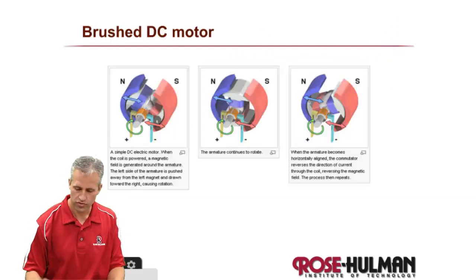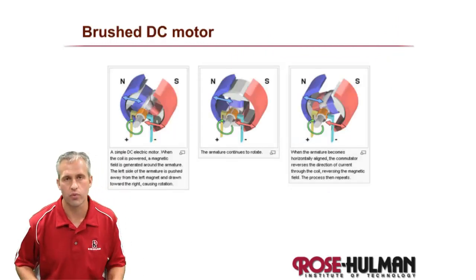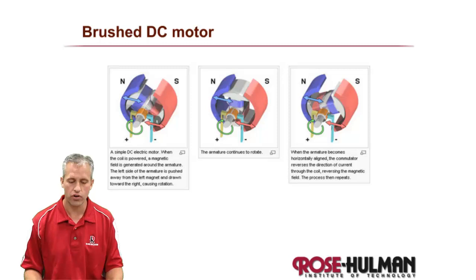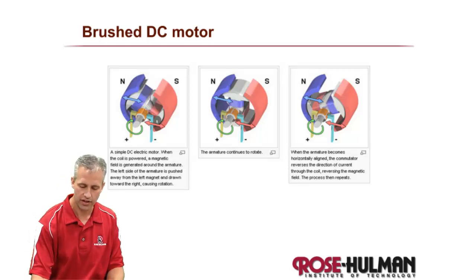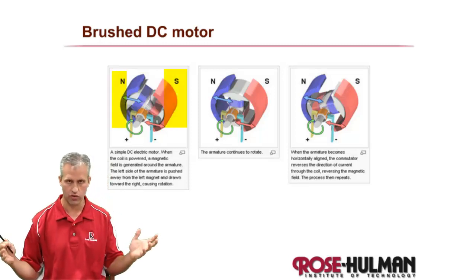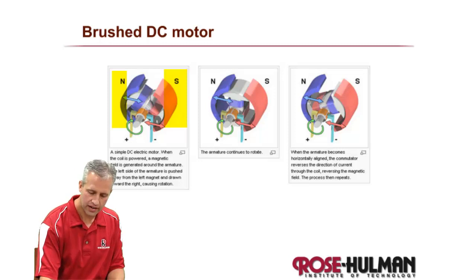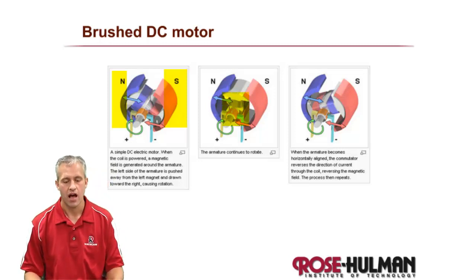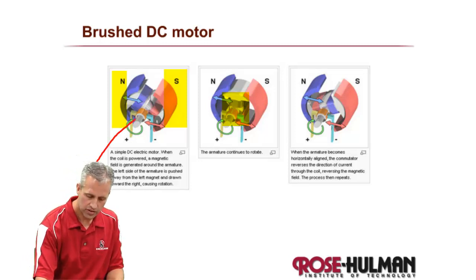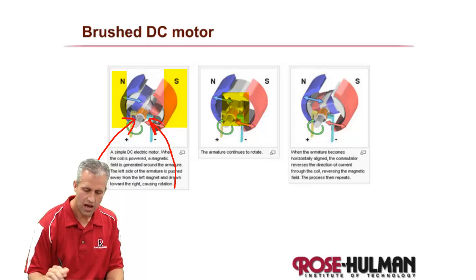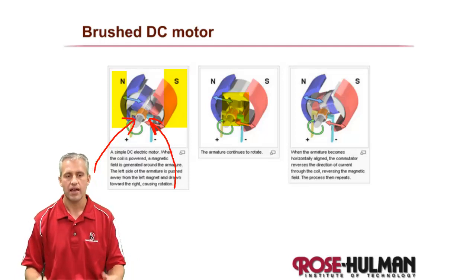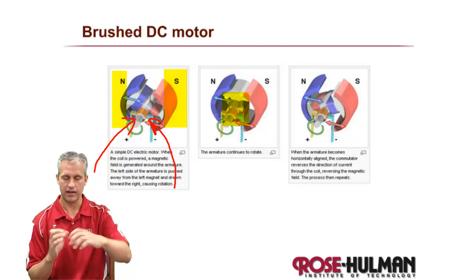The first type is a brushed DC motor. It has permanent magnets on the outside — just regular magnets — and an electromagnet on the inside. If you look closely, you can see there are little brushes on the shaft. These connect via the commutator to a wire, creating an electromagnet in the middle.